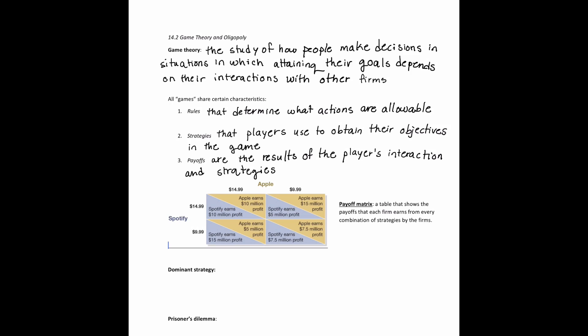You can think of the payoff as the profit a firm earns as a result of how its strategies interact with other firms' strategies. What we have here is called a payoff matrix — a table that shows the payoffs that each firm earns from every combination of strategies. Our two players in this game are Spotify and Apple.